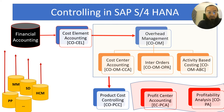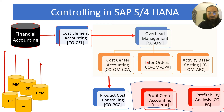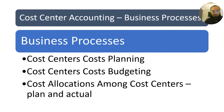This is the broader picture of what we do in controlling, which we discussed in the very first video of this playlist. Data actually comes through different modules in financial accounting and then flows to controlling. Technically the two databases are the same in the S/4HANA system. Within the overhead management component the first module is cost center accounting, and within cost center accounting there are three basic processes: cost center planning, cost center budgeting, and cost allocations. Cost allocations are part of planning as well as actual postings, and this is what we are going to discuss in this current video.